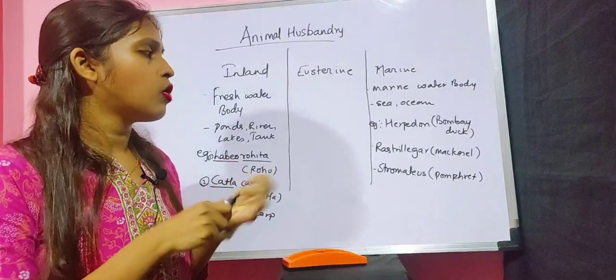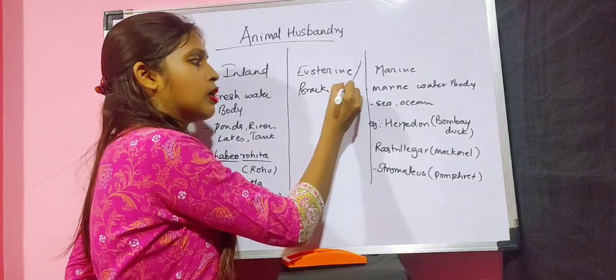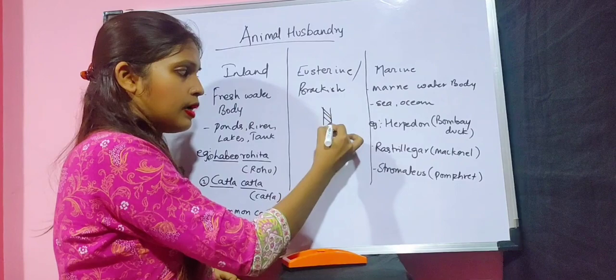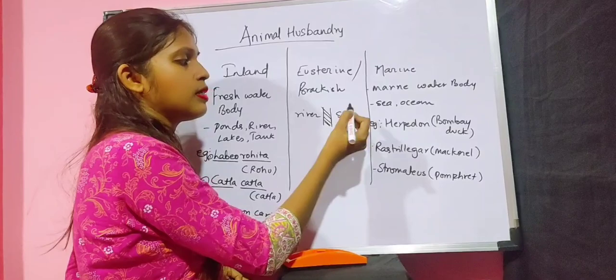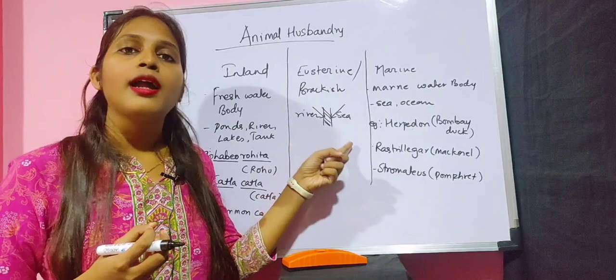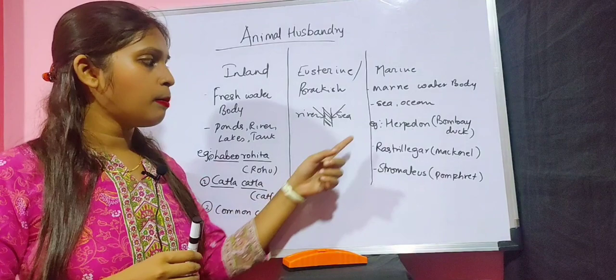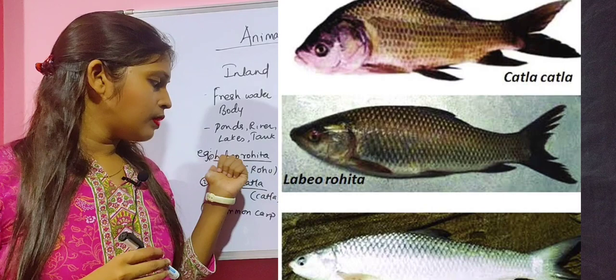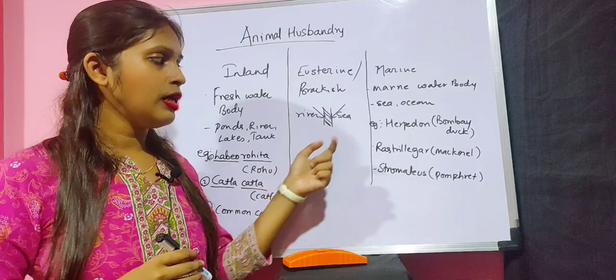Estuarine fish farming, also called brackish water fish farming, occurs at the junction where river water and sea water meet — where there is a mixture of freshwater and marine water. Pictures of fishes like Labio rohita, Katla katla, Harpedon, Rastralega, and Stromatius are provided below for reference.